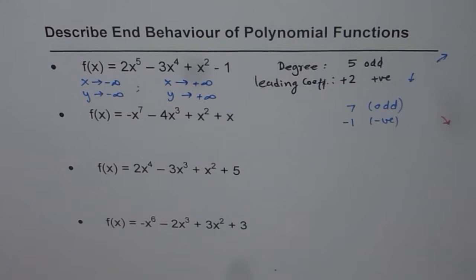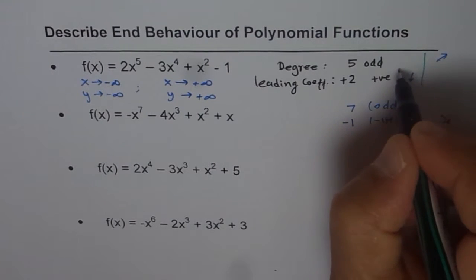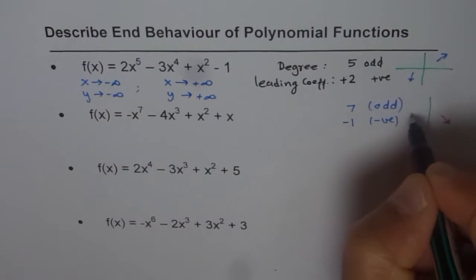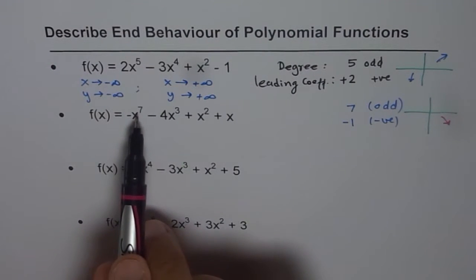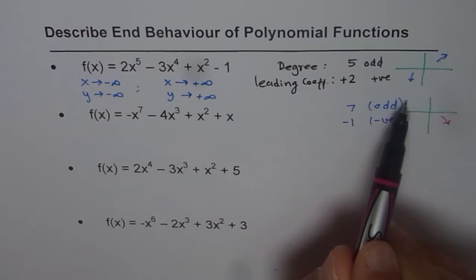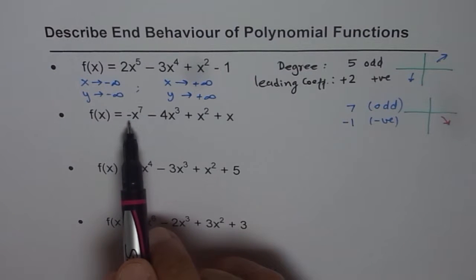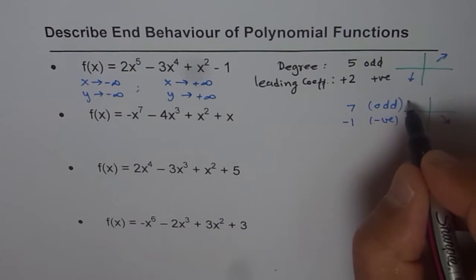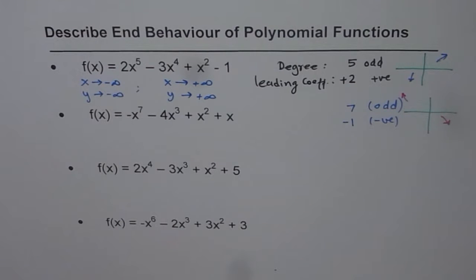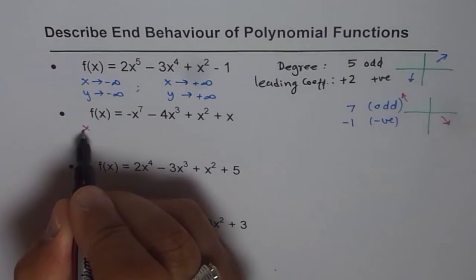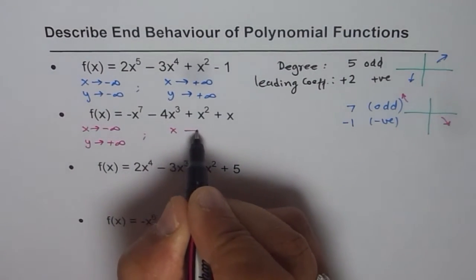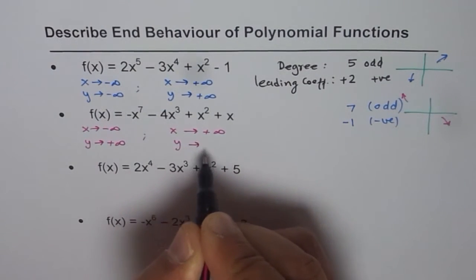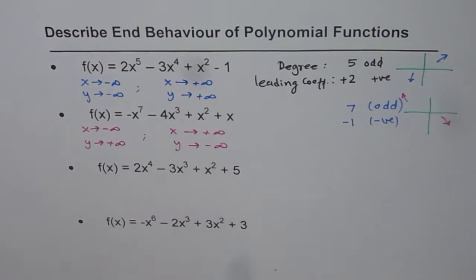Since the leading coefficient is negative, the right side will be down, not up. And since it is odd degree, both ends face opposite sides. So the end behavior is: as x approaches negative infinity, y approaches positive infinity. And as x approaches positive infinity, y approaches negative infinity. That is the end behavior of the given function.